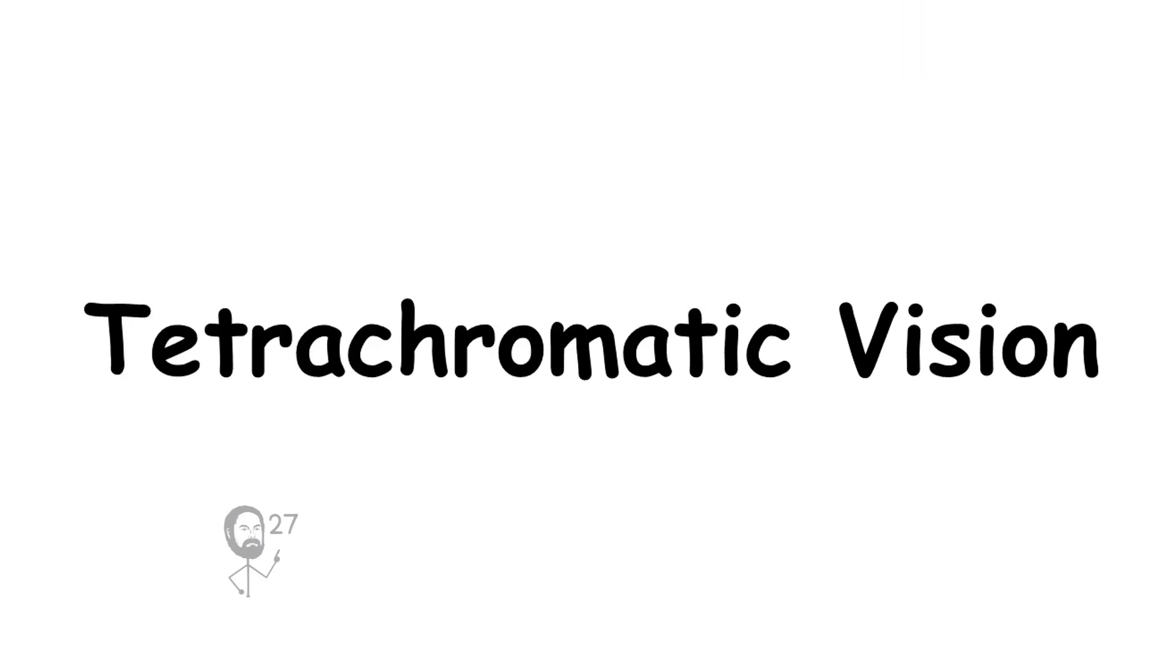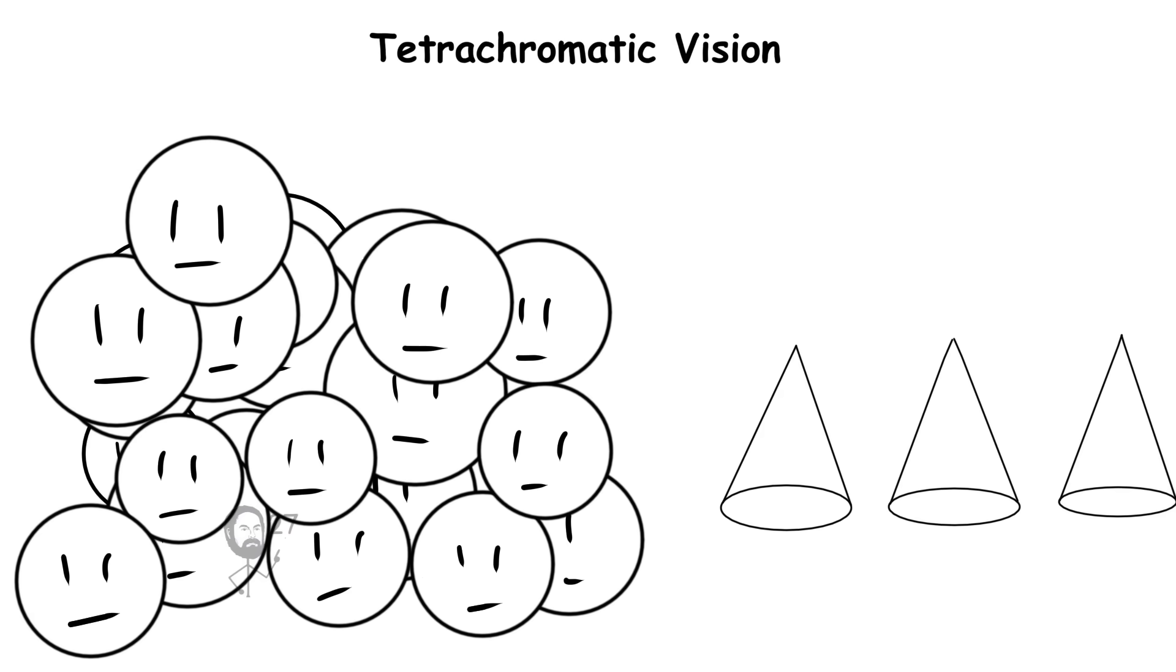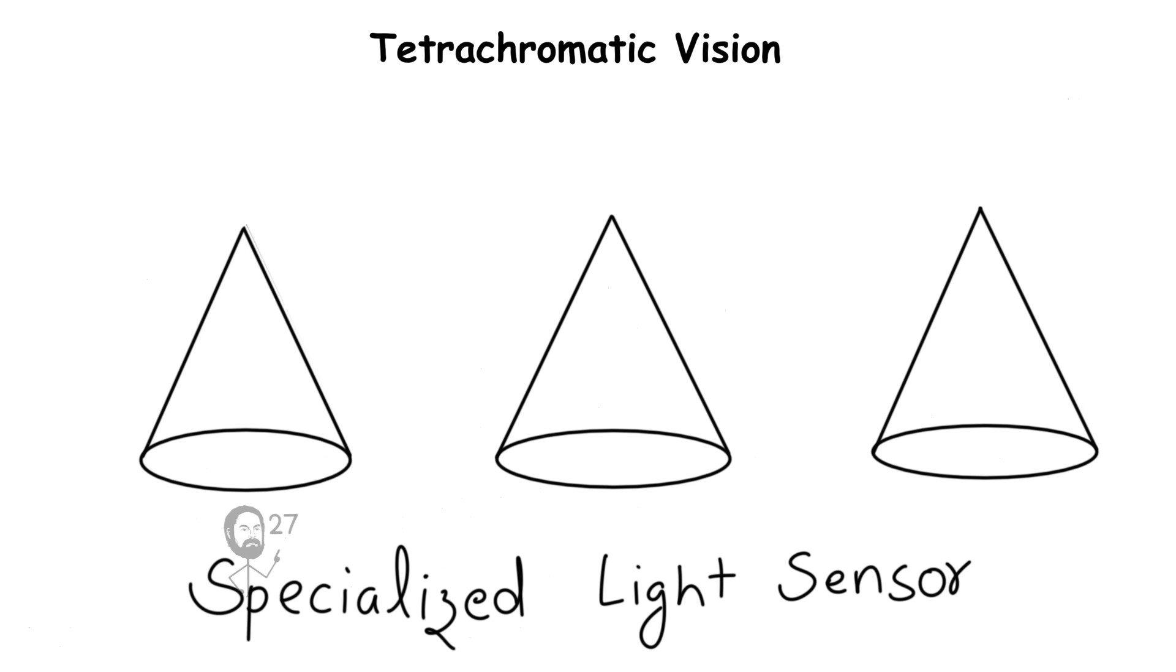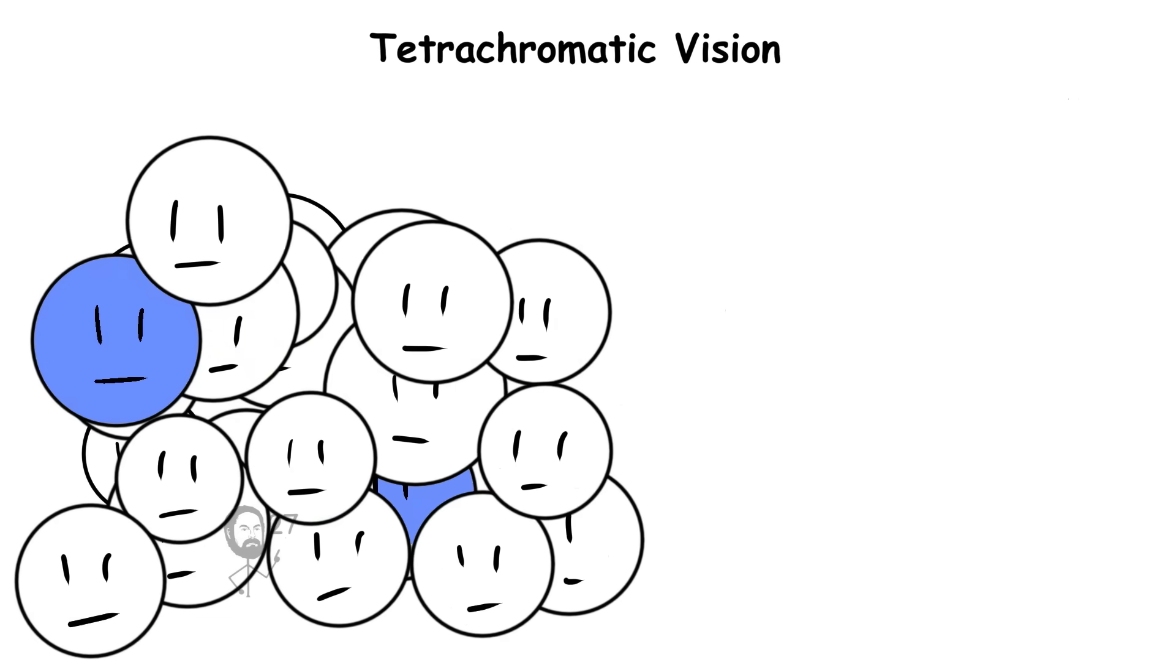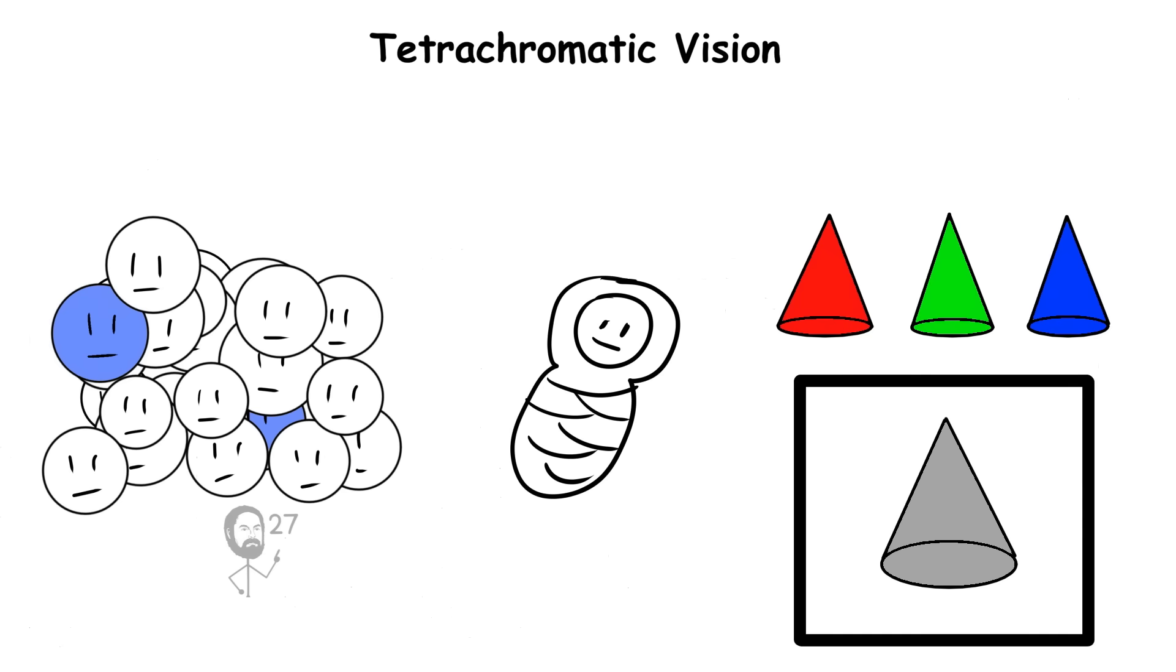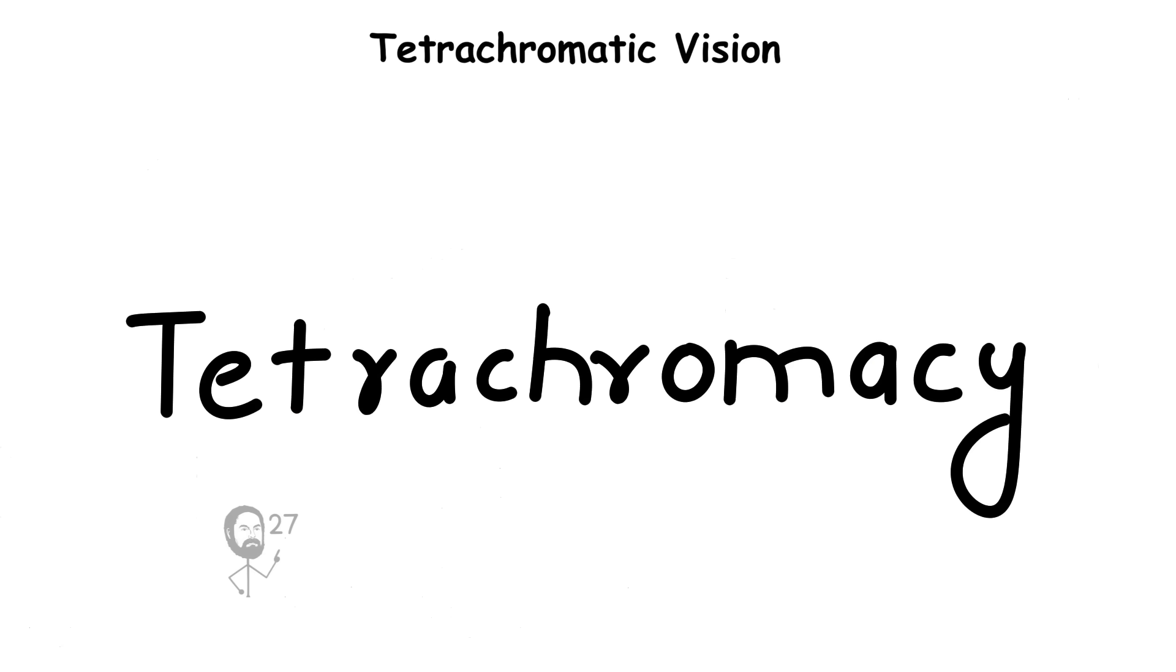Tetrachromatic vision. Most people rely on three types of cone cells in the retina, specialized light sensors tuned to red, green, and blue wavelengths. A small number of individuals, however, are born with a fourth cone type, a condition known as tetrachromacy.